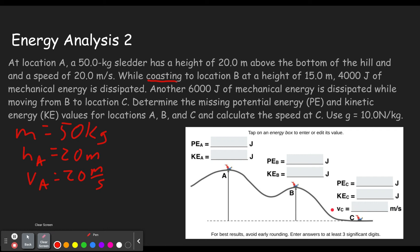While coasting to location B at a height of 15 meters. So the height of B is 15 meters. And we see that from A to B, we lost 4,000 joules of energy. 4,000 joules of energy is dissipated. That means it turns into heat, it turns into sound, it's no longer the mechanical energy of the sledder. Then we see from B to C, we lose 6,000 joules of energy.